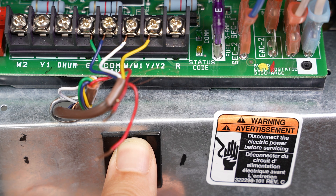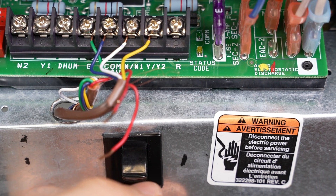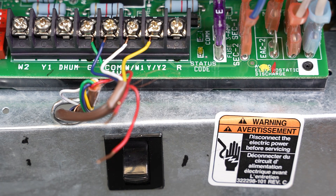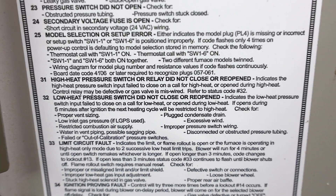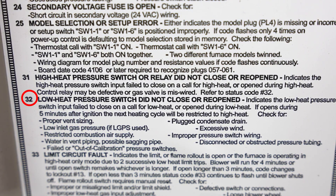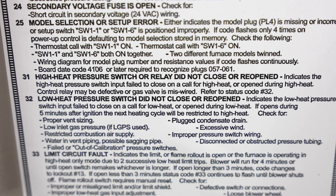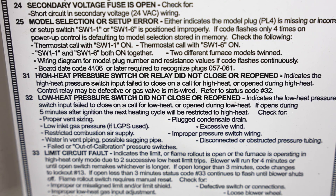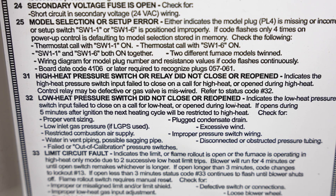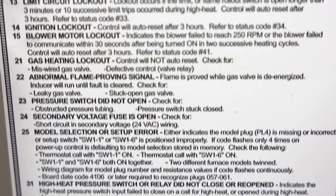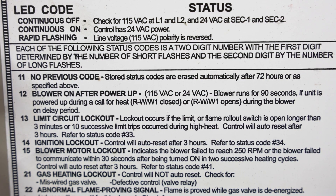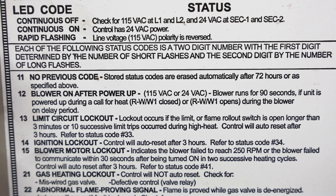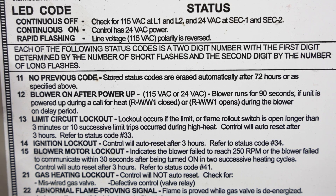1 and 1. One short blink, one long blink. Let's go ahead and take a look at the back of our furnace door and see what these codes mean. Here's our list of error codes. If we scroll down and find 32 — code 32 is a pressure switch that did not close. Since we had that code three times in a row, that means the furnace encountered this problem three times, which was followed by code 1-1, which is no previous codes. So this means the furnace ran into a pressure switch problem three times, and didn't register any other problems besides that.